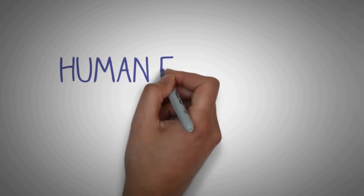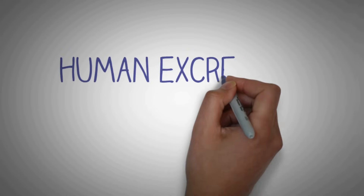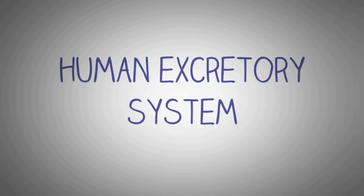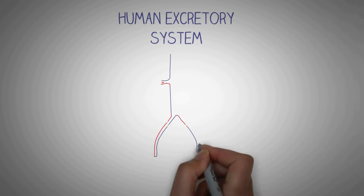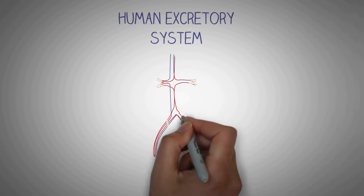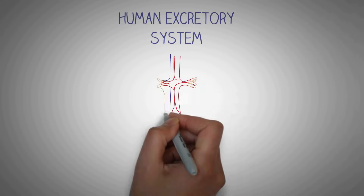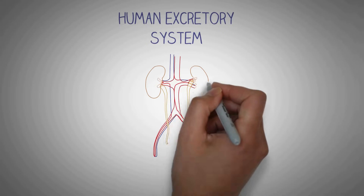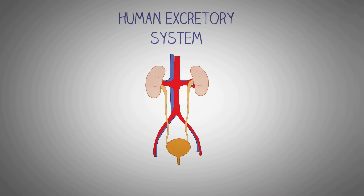Hello and welcome to Medsimplified. The human excretory system is one of the most important organ systems of the body that performs the vital function of filtering your blood and removing excessive and unnecessary materials from the body. This helps to maintain an internal chemical homeostasis and prevent damage to the body.